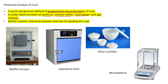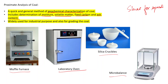These four important constituents of coal can be determined using proximate analysis, which does not require very sophisticated instruments. Rather, we use a muffle furnace, laboratory oven, micro balance, silica crucibles, and sieve sets for separating coal powder after grinding.